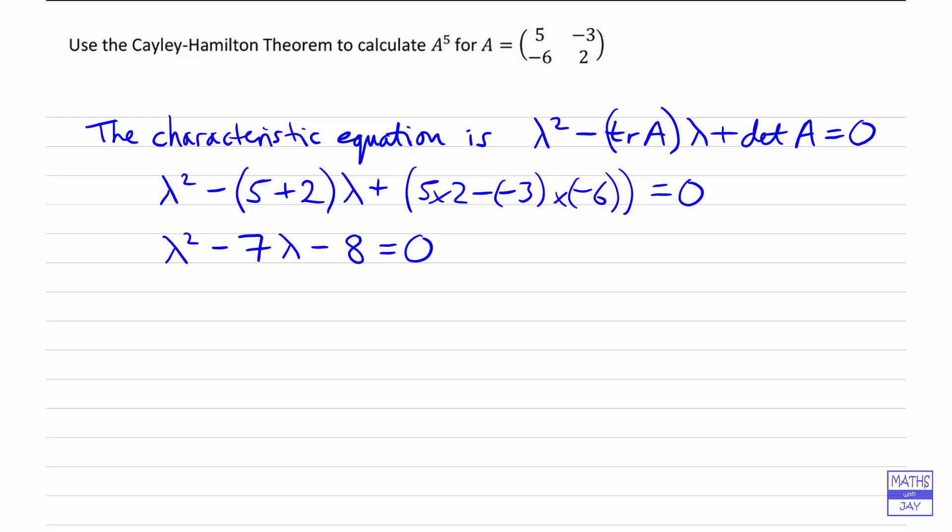So what that means is we can write down, instead of lambda, A. So we've got A², that's the matrix A squared, minus 7 times A. And because this is a matrix equation, we can't just leave the 8 on its own, so it needs to multiply the relevant identity matrix, and that equals 0.